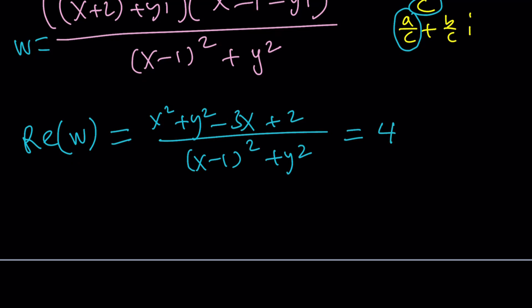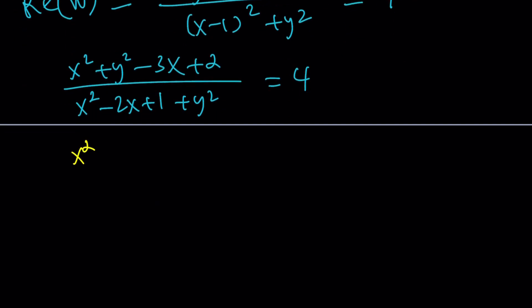Where do we go from here? Here's what we're going to do. Simplify the denominator and write it as X squared minus 2X plus 1 plus Y squared equals 4. And guess what the next step is going to be? Cross multiplication. X squared plus Y squared minus 3X plus 2 equals 4X squared minus 8X plus 4 plus 4Y squared. Something interesting is going to happen.